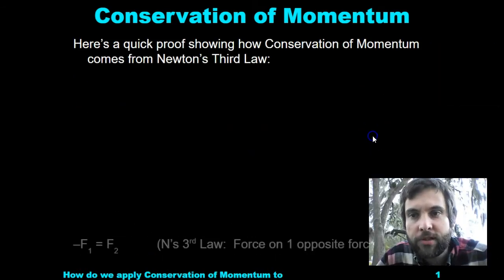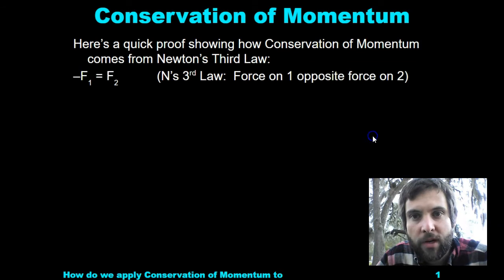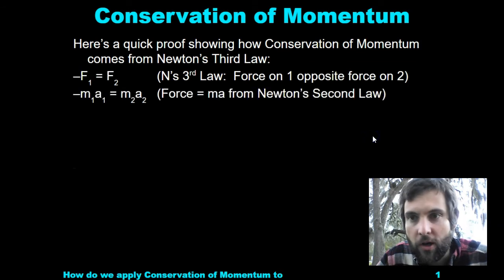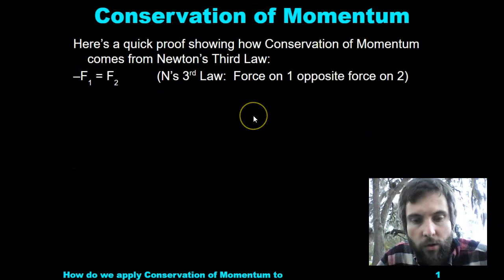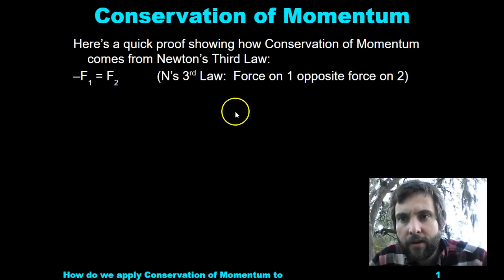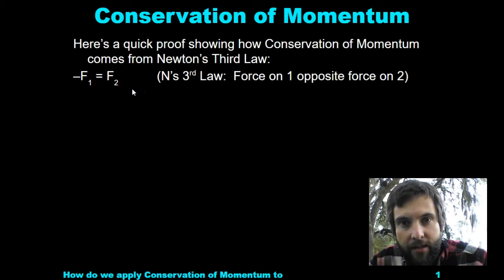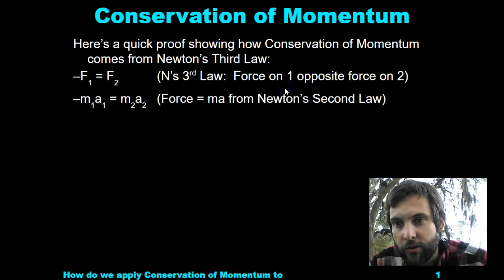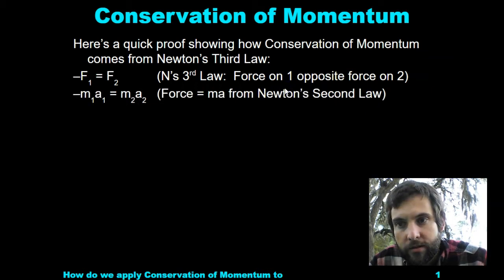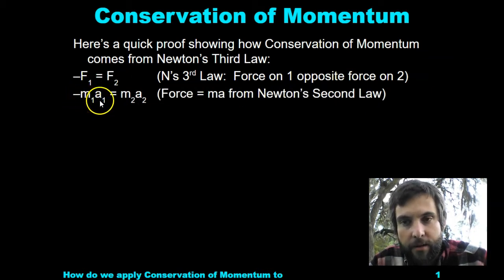Here's a quick proof showing how conservation of momentum comes from Newton's third law. We have two equal but opposite forces acting — force on one is opposite of force on two. So we have negative M times A equals M times A.